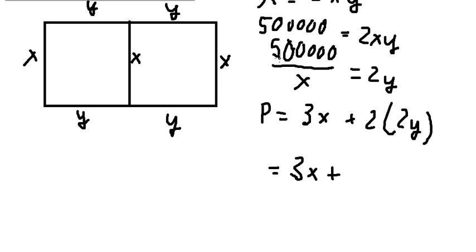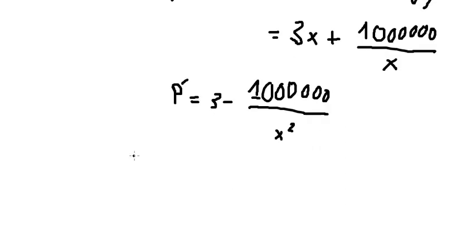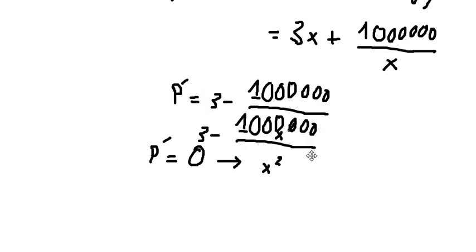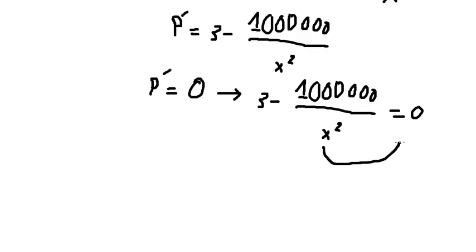So number two multiplied by this one, we have 1 million divided by x. Later, we need to do the first derivative of P. This one we have number one, this one we have negative 1 million divided by x squared. Later we put this equals to zero to find the critical values.